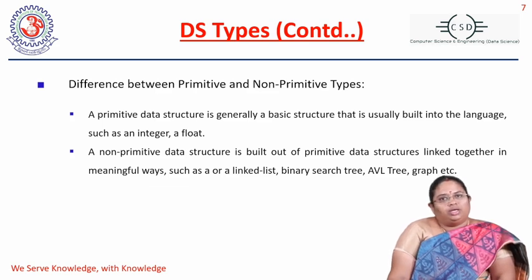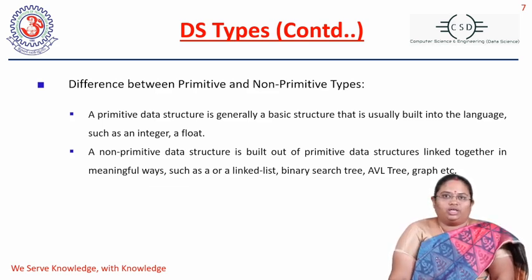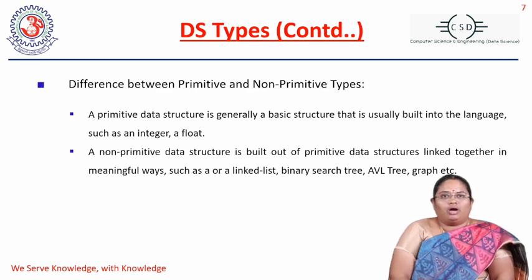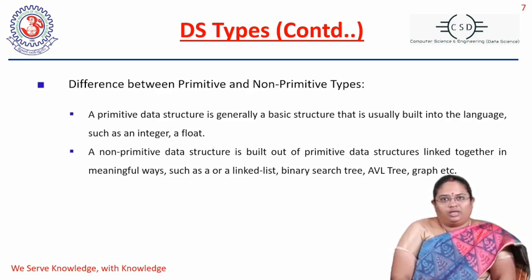Examples of non-primitive data structures are linked list, binary search tree, AVL tree, and graph. These are all non-primitive types that we will see here.